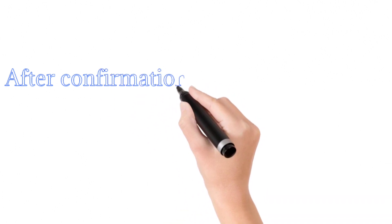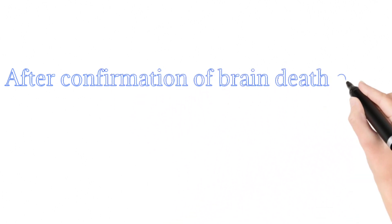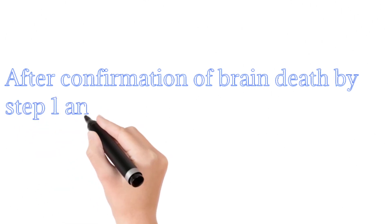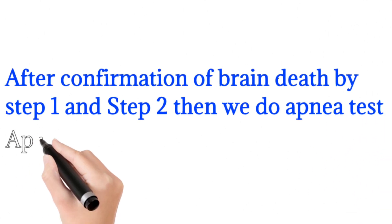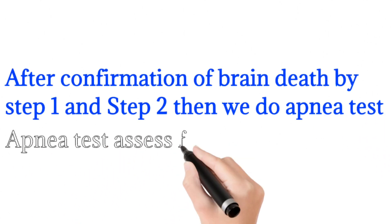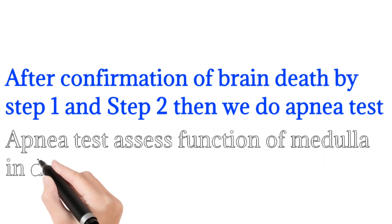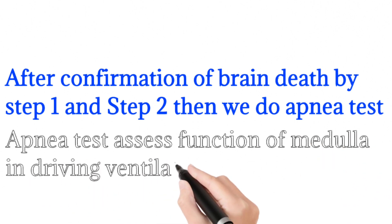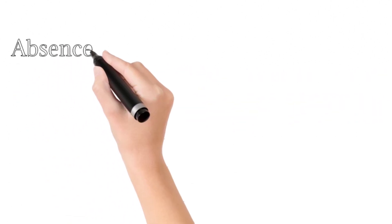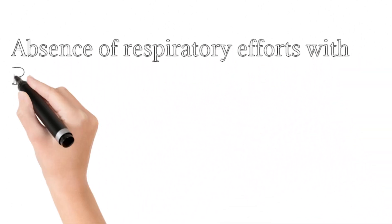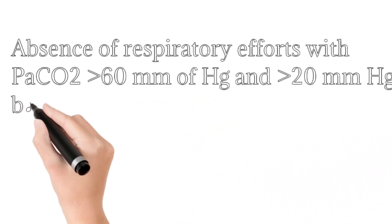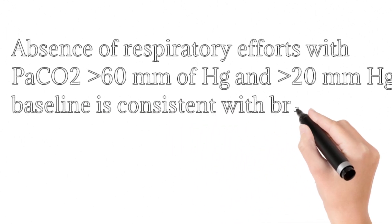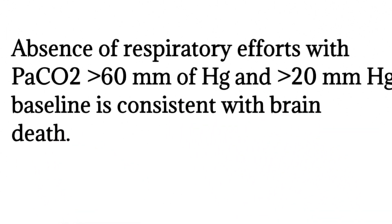After confirmation of brain death by criteria one and criteria two, we move to the third one, the apnea test. Apnea test usually assesses the respiratory drive center present in the medulla oblongata. Absence of respiratory efforts with pCO2 more than 60 mmHg and 20 mmHg above baseline is consistent with brain death.